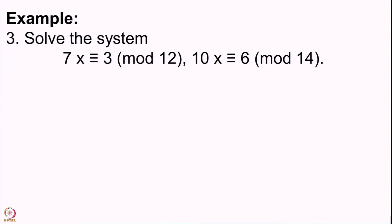Problem 3 is: 7x ≡ 3 mod 12 and 10x ≡ 6 mod 14. If you remember the examples we have done on solving one linear congruence, you will realize these are ones we have already solved. Note that the moduli are not quite co-prime to each other — one modulus is 12 and another is 14 — so we cannot directly apply the Chinese Remainder Theorem. We will have to modify the systems first.